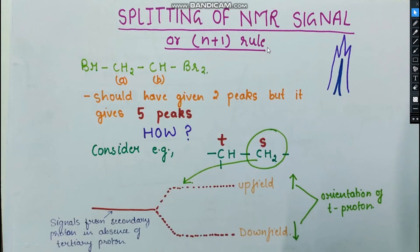Next: splitting of NMR signals, or the n+1 rule. Consider a compound that should give two peaks because two hydrogens are equivalent and one hydrogen is non-equivalent — yet we get five peaks instead of two. This splitting occurs due to adjacent protons. To understand the splitting of a secondary proton, we look at the tertiary proton adjacent to it.